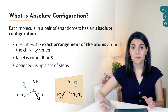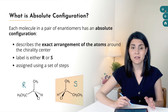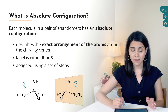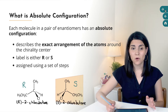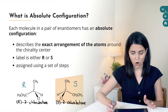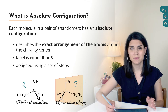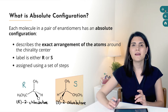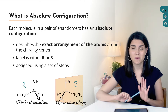For example, the chirality center on the left-hand molecule has the R configuration and the one on the right has the S configuration. These labels get incorporated into the IUPAC names: the one on the left is called R-2-chlorobutane and the one on the right is S-2-chlorobutane. The R and S configurations are assigned using a set of steps.